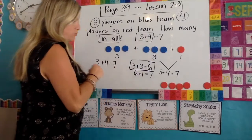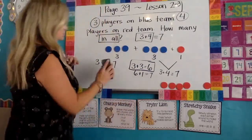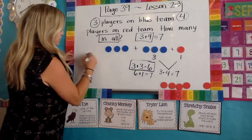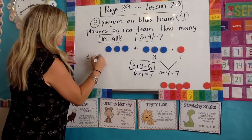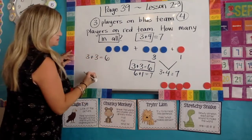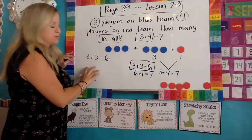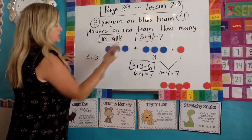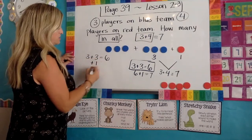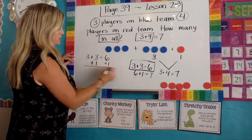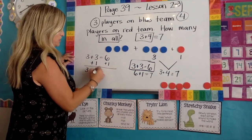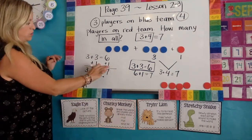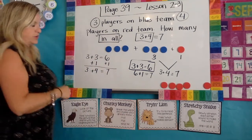Let me show you in a different way. If you took three plus three equals six — if you know three plus three equals six is a doubles fact — then you know you're doing three plus four. So you add one to the three, and you also have to add one over here. So then it would be three plus four equals seven. You add one to both sides and then you get your answer.